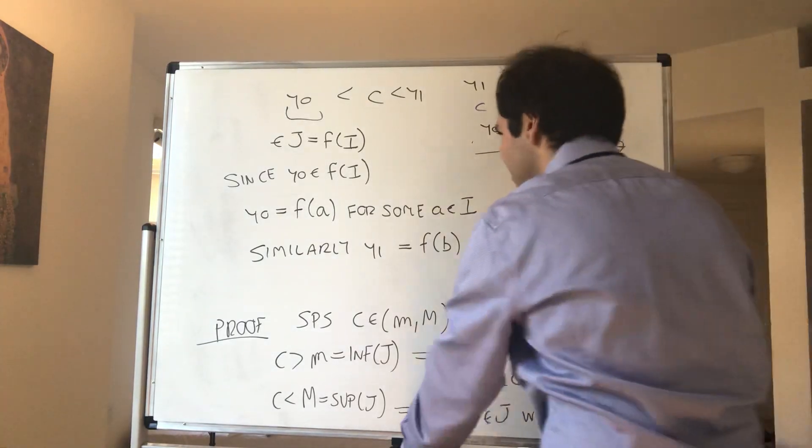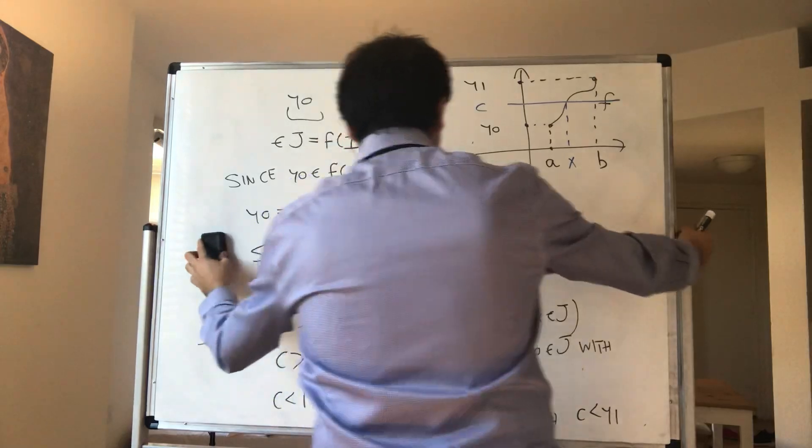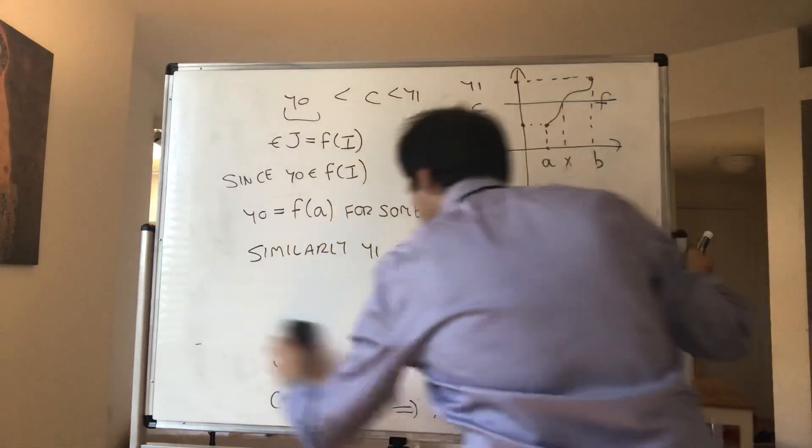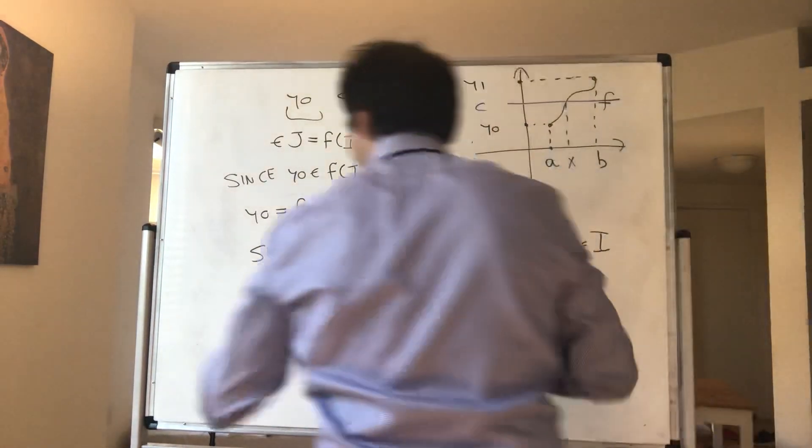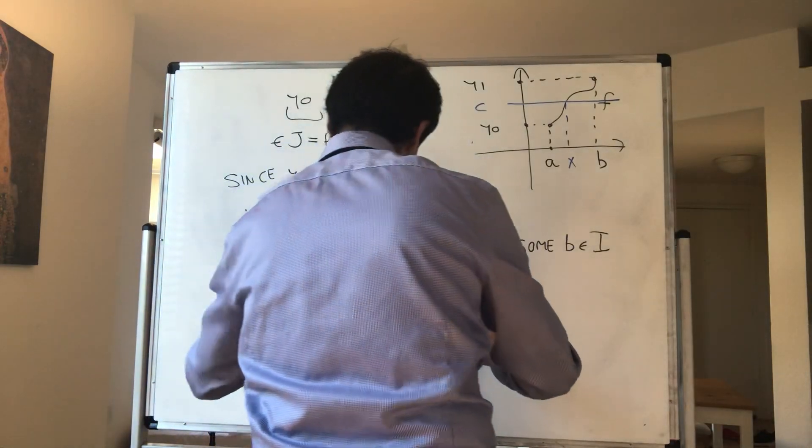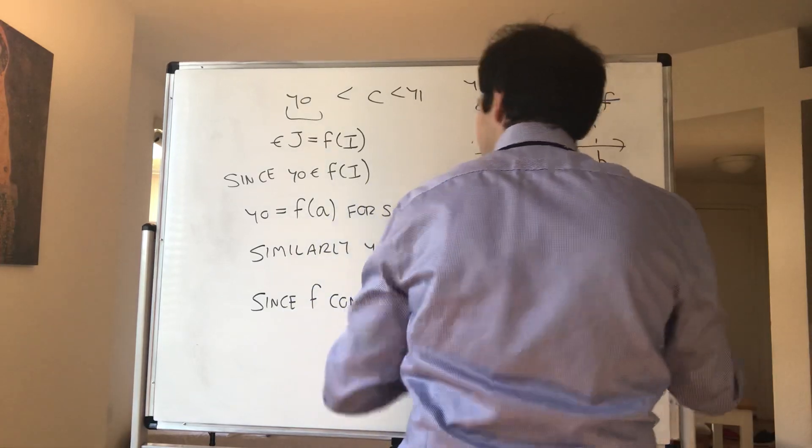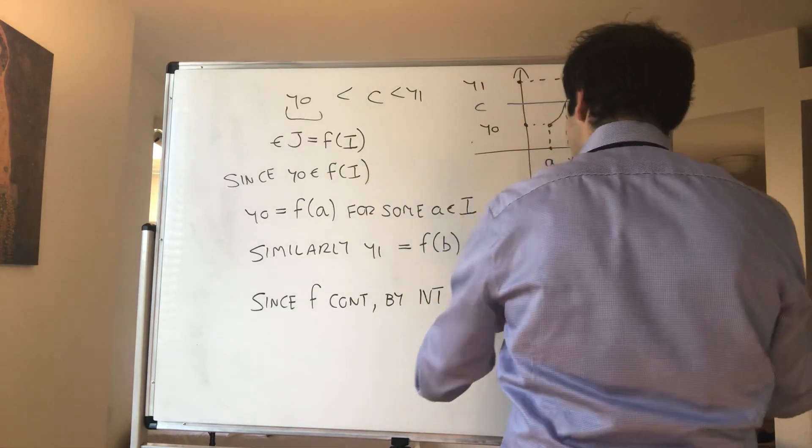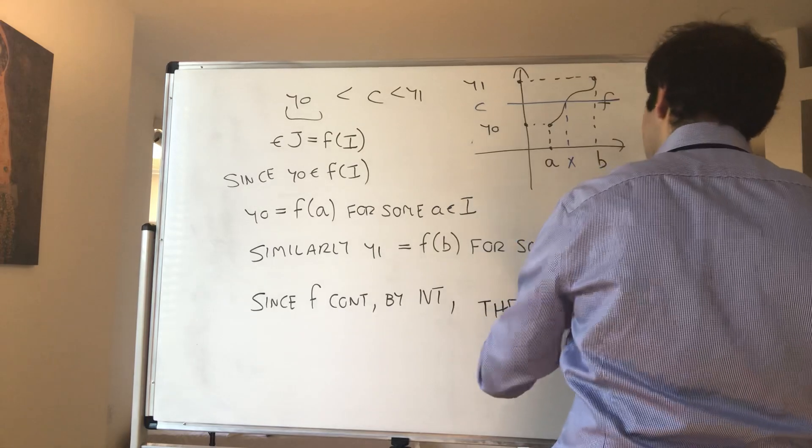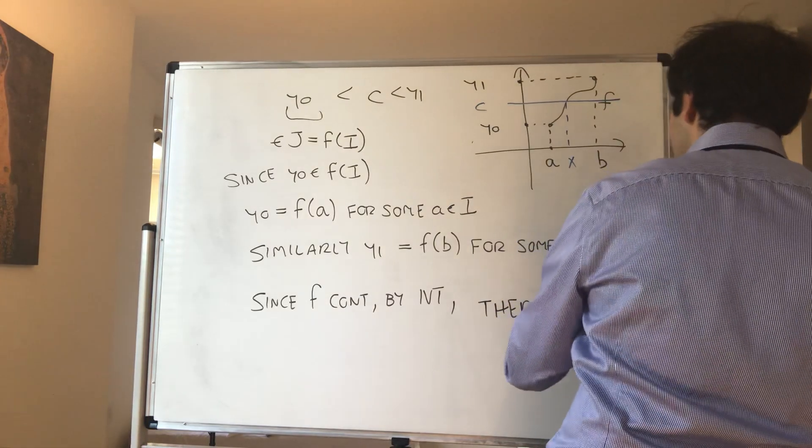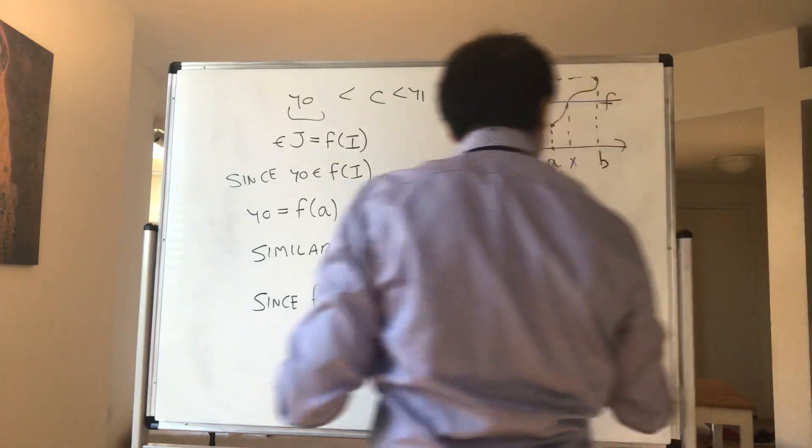So by IVT, so since f is continuous, by IVT there is some x in between a and b.